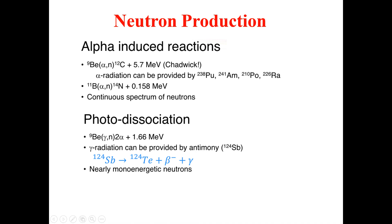In this particular photodisintegration reaction, gamma radiation can be provided by antimony. The question is from where we can get the gamma radiations. The gamma radiations can be provided by antimony. The second reaction for photodisintegration is that we can get gamma from the beta decay of antimony-124, where antimony-124 is transferred to tellurium by the emission of beta-negative, along with gamma radiation.